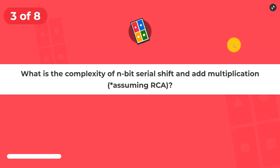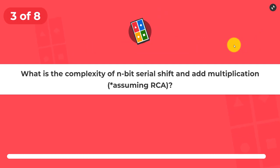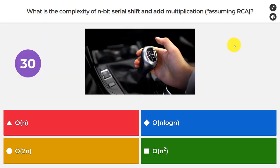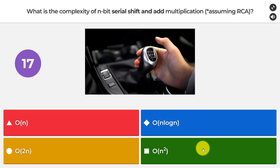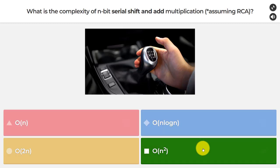For the next question: what is the complexity of an n-bit serial shift-and-add multiplication, assuming we're using ripple carry adders? Is it O(n), O(n log n), O(2n), or O(n²)? The answer is O(n²).